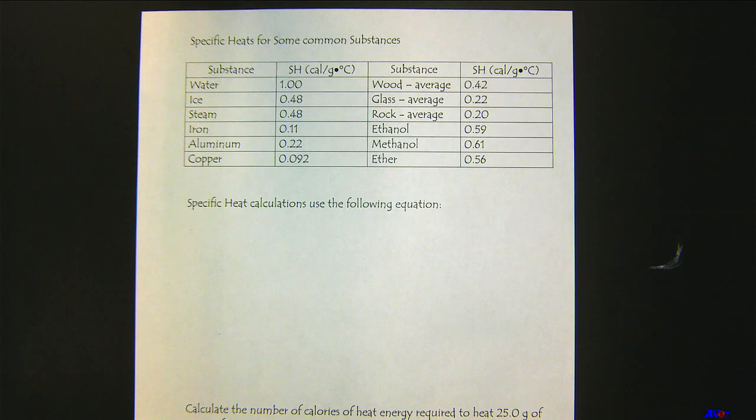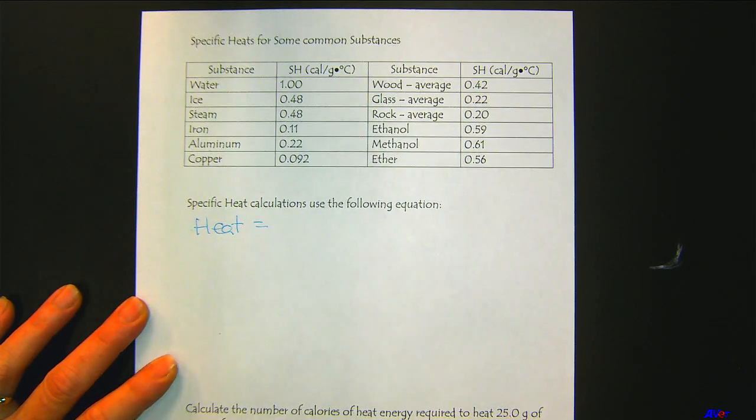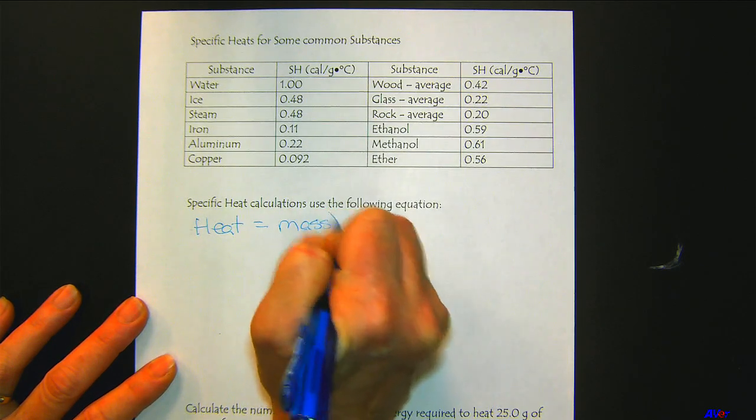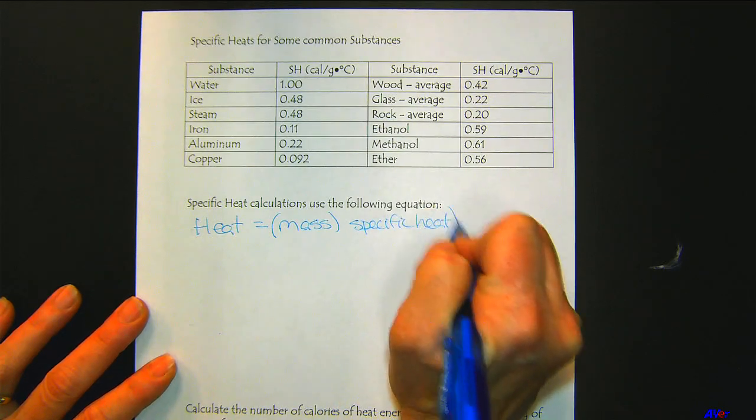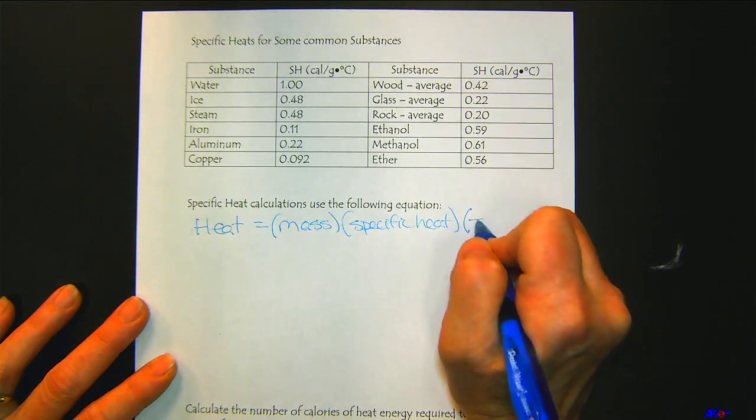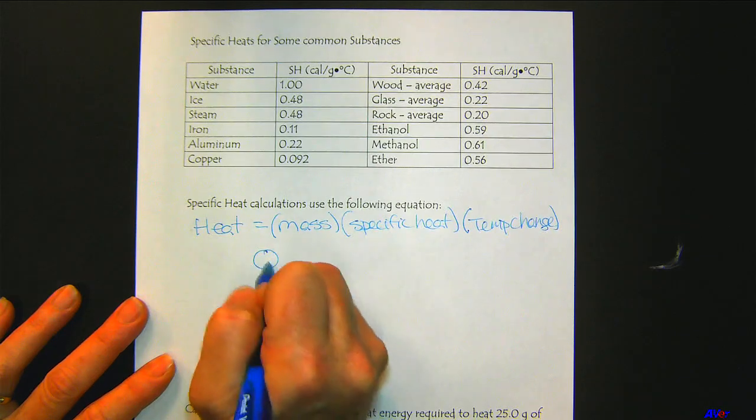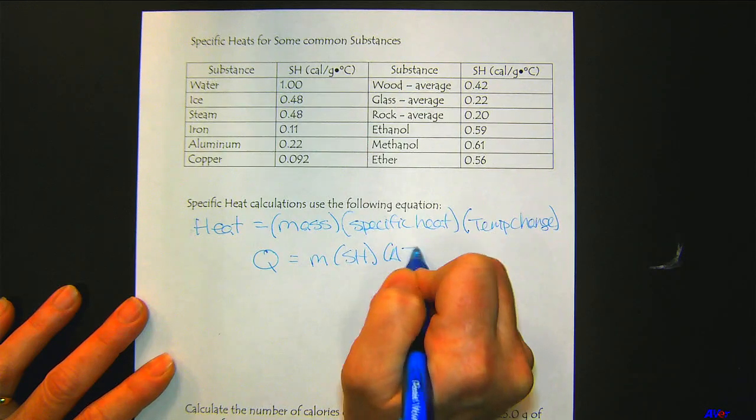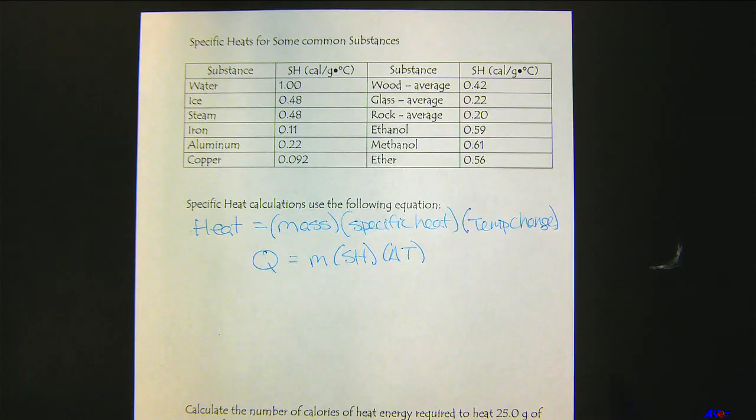So let's look at the different types of questions that you can answer using your understanding of specific heat. The first thing, let's write it out in words one more time. The heat that's needed is going to be the mass of the object that we're trying to raise the heat of, and then the specific heat, which we're always going to look up in a table, and then we have our temperature change.